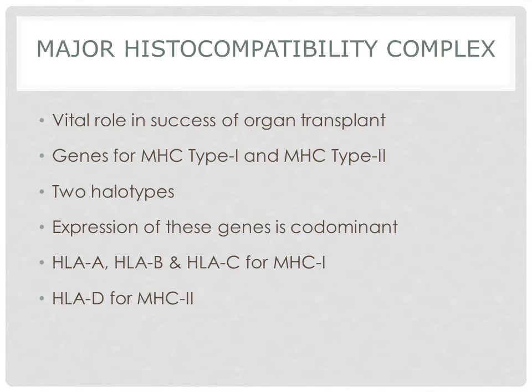Each person has two haplotypes — one set of genes from the father and one set from the mother. The expression of MHC is co-dominant, meaning proteins encoded by both the maternal and paternal genes are present.